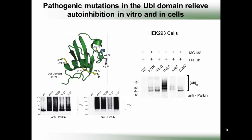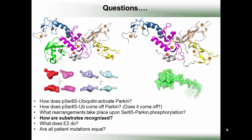This has opened up a whole slew of questions, which brings me to my final slide. Parkin must now be one of the best structurally characterised ubiquitin ligases. There are high-resolution crystal structures, lower-resolution crystal structures, solution structures, and low-resolution full-length structures in solution — and yet we still don't fully understand how it works.